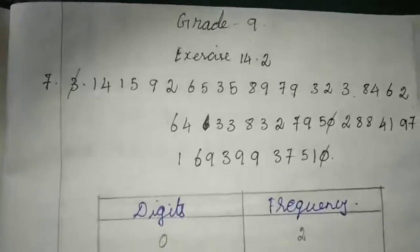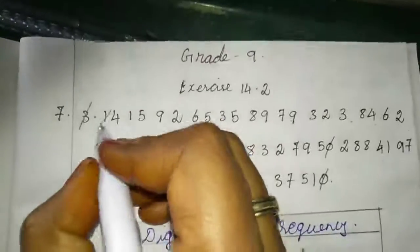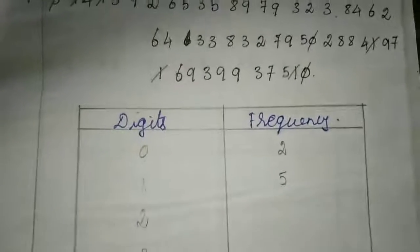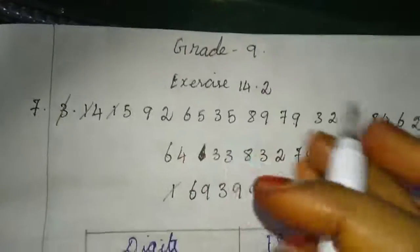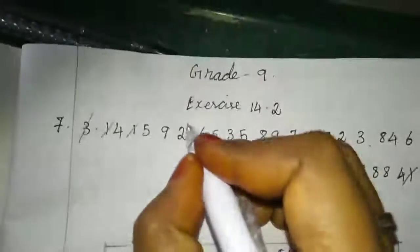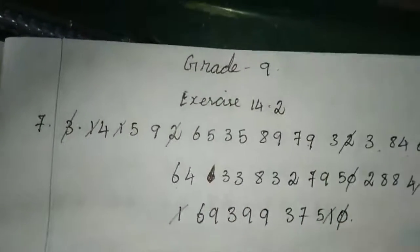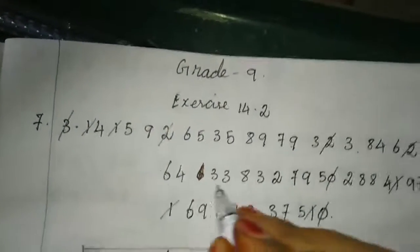Next, one we are going to refer. See here, counting through the digits, we have one five times, so here it will come five. Second one, next two, how many times will it come? Counting, two also we are getting five times.